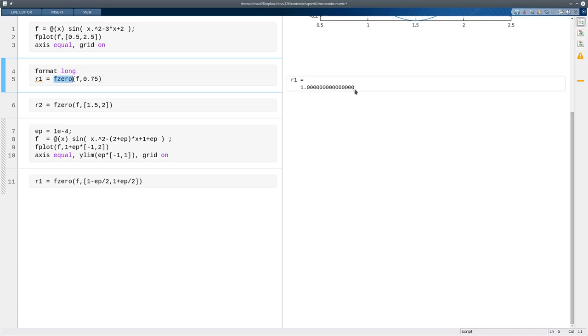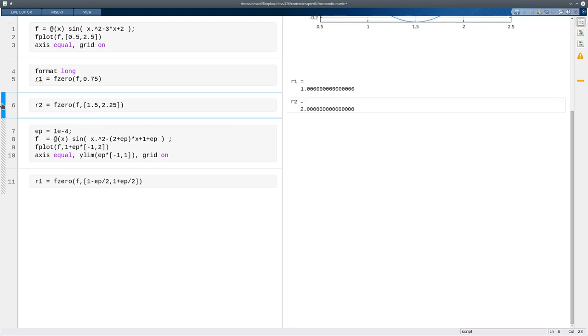And it did, and in fact, all the digits it found are correct. Here I'm going to call fzero slightly differently. In this case, I'm going to give it an interval where I know that the root lies. So I know that the root 2 lies somewhere in that interval. And again, it finds the root to all digits being accurate.